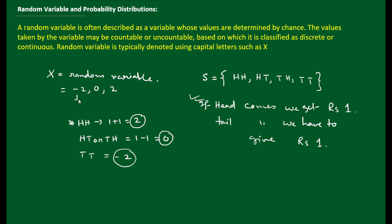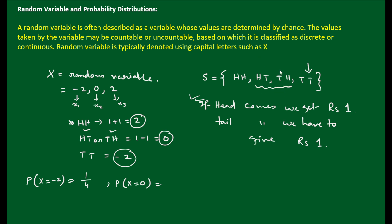Each random variable value is denoted by x1, x2, x3. For this problem, capital X takes three values: minus 2, 0, and 2. The probability of X = minus 2 (both tails) is 1/4, since tail-tail occurs in one case out of a total sample space of 4 elements. Probability of X = 0 (head-tail or tail-head) is 2/4, which equals half.